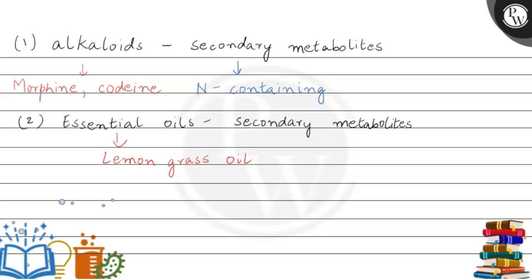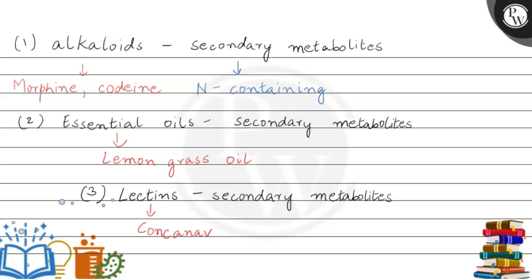The third option is lectins. Lectins are also secondary metabolites, and the types of lectins include Con Canavalin A. Con Canavalin A is the most famous type of lectin, so Con Canavalin A is a type of lectin.